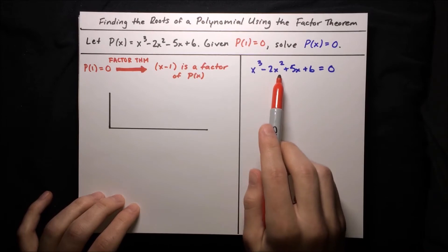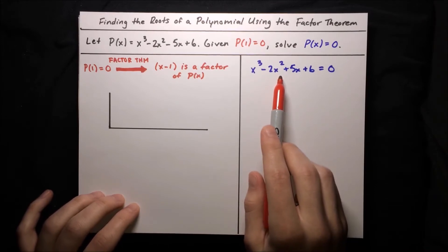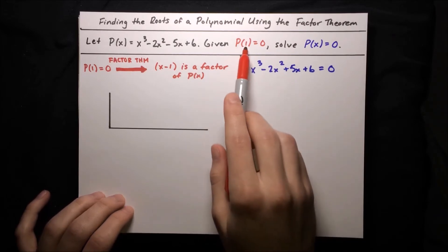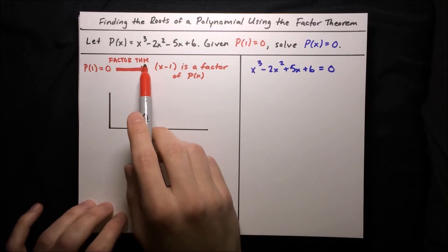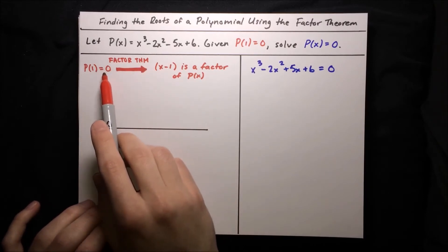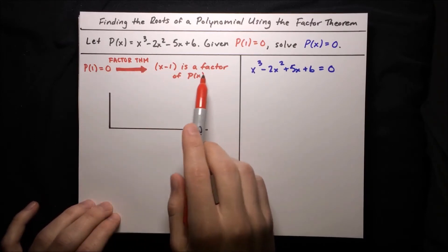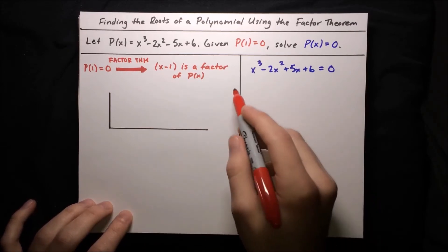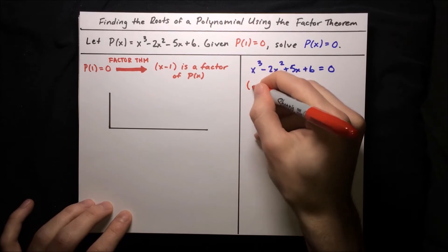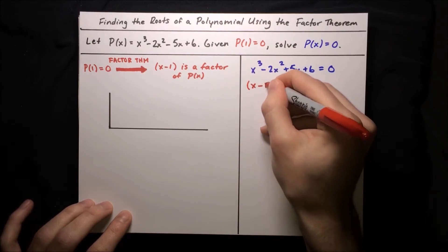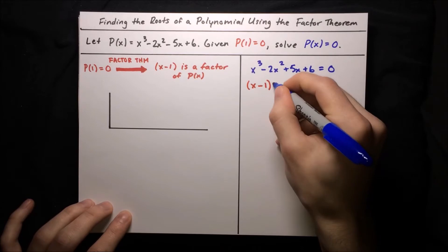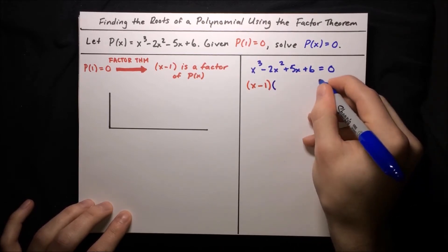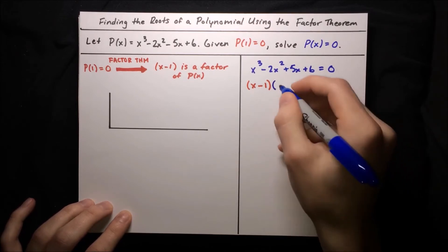But factoring a cubic is pretty tricky, so how are we going to do this? Thankfully, we have that p of 1 equals 0, and according to the factor theorem, since 1 is a root of the polynomial, x minus 1 is a factor of the polynomial. So we already know one of the factors. The next factor — whatever x minus 1 multiplies — has to be a quadratic, and quadratics are a lot easier to solve.